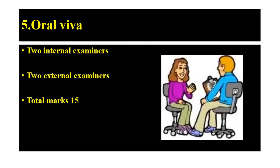The fifth and last exercise is oral viva. It is divided between two internal examiners and two external examiners, so each candidate must go to all four people — two internals and two externals. The total marks for oral viva will be 15 marks, and they will ask questions related to the microbiology subject.